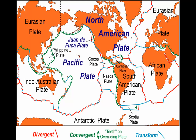Each plate is surrounded by different types of plate boundaries. Let's use the North American plate as an example again. To its east, we have a divergent boundary with the Eurasian plate and the African plate, where new oceanic crust is being made by seafloor spreading. Off the Oregon and Washington coasts, North America is convergent with a small plate of oceanic crust called the Juan de Fuca plate.